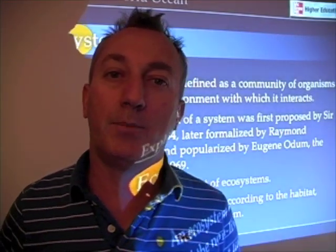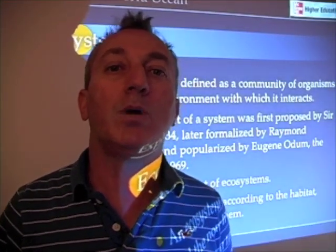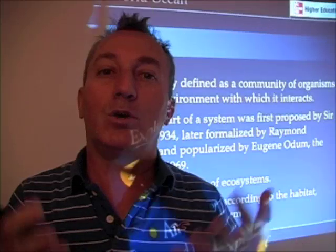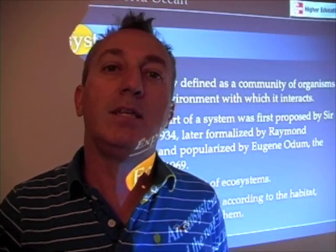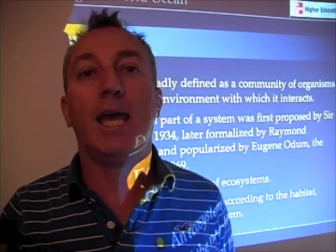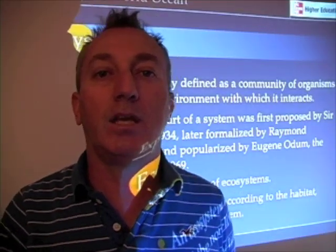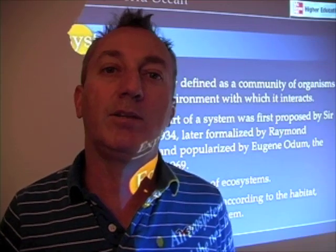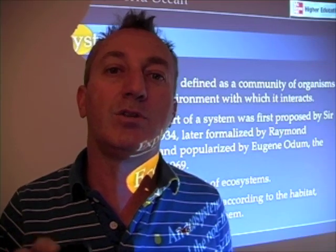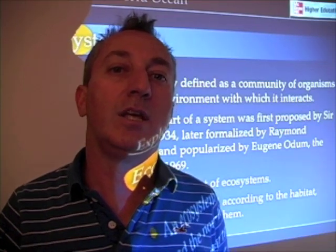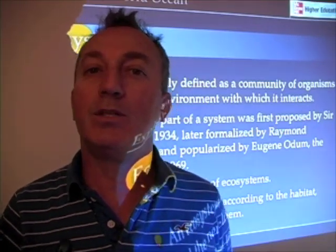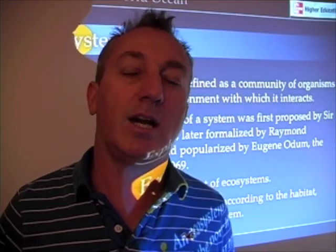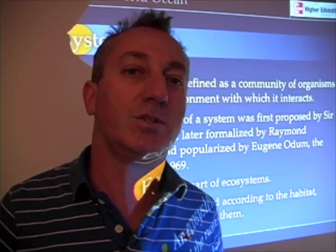We'll talk about coastal ocean ecosystems in chapter 15. But here we want to look at some of the pelagic, or open ocean, food webs and take a look at the kinds of things that control their dynamics, as well as some of the similarities and differences between these different kinds of ecosystems.